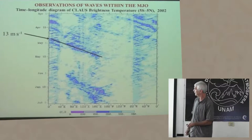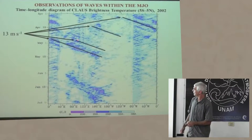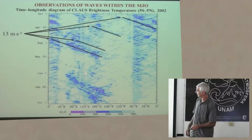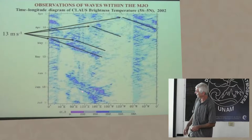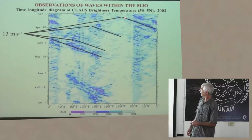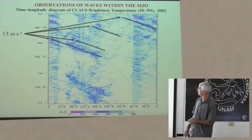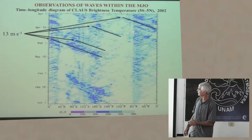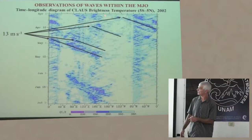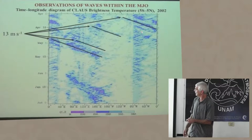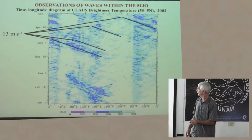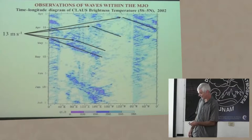You see several examples of Kelvin waves in this diagram, some embedded in the MJO. These are very important disturbances over the Amazon region. You can also see westward propagating squall lines that have been studied quite a lot over the Amazon.